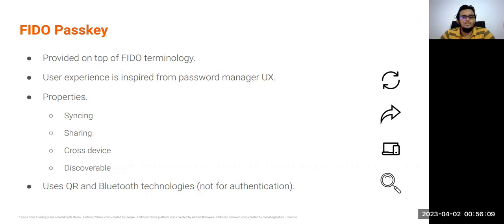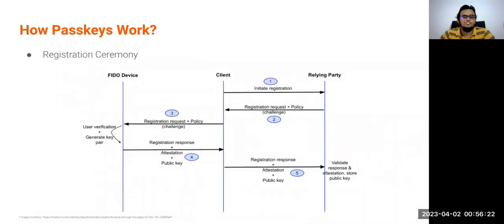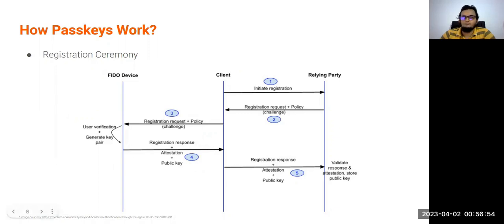Passkeys use Bluetooth and QR technologies, but these are not used for the authentication itself. Bluetooth is used to confirm physical proximity, but the actual FIDO assertion is not shared over Bluetooth. The Passkey flow works much the same as a typical FIDO flow when signing in with the same device. The relying party server generates a challenge and sends it to the FIDO device. The FIDO device performs user verification and generates a public-private key pair. The private key is securely stored on the FIDO device, and the related public key is shared along with the registration response to the relying party, which then stores the public key.